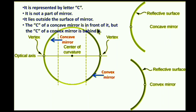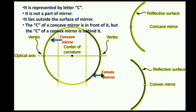The center of curvature of a concave mirror is in front of it, but the center of curvature of a convex mirror is behind it. This is the major distinction between the two.